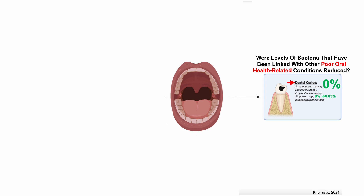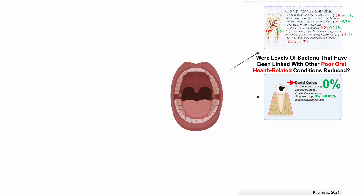What about bacteria linked with other poor oral health conditions? For primary endodontic infection — infection of the dental root — I had a lot of those bacteria for both tests. Summing them: 2.9% for the first test, improving to 1.7% for the second. Once again, Fusobacterium nucleatum and Tannerella forsythia account for 1.5% of that 1.7%, so reducing those two would make a big dent in that figure as well.